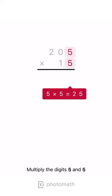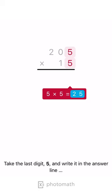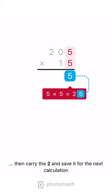Multiply the digits 5 and 5. Take the last digit, 5, and write it in the answer line. Then carry the 2 and save it for the next calculation.